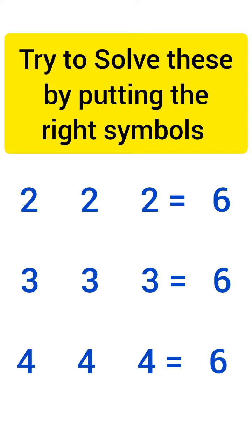2 2 2 equals 6. I think the first one is not too difficult. I hope you can do it easily. Let's try. 2 plus 2 plus 2 equals 6.